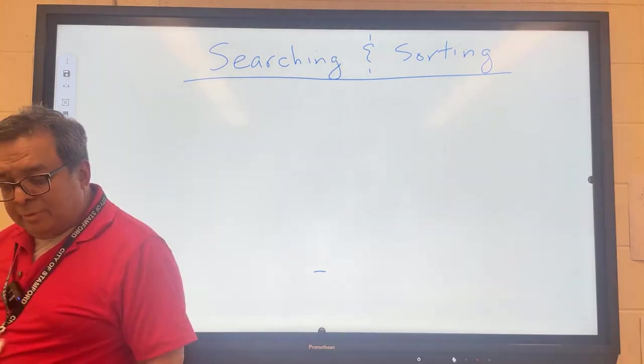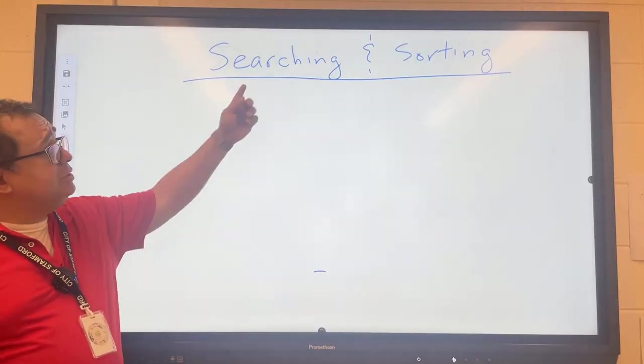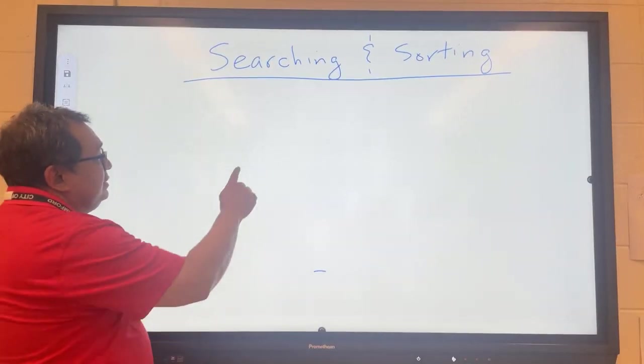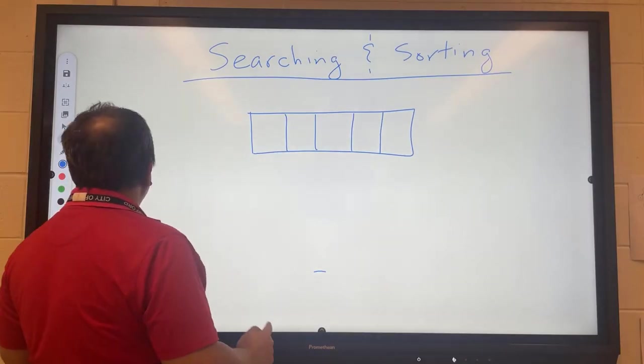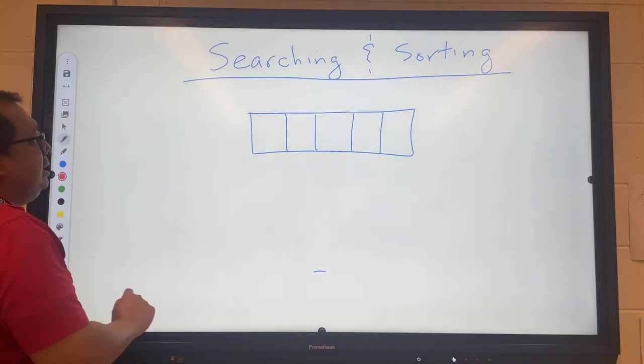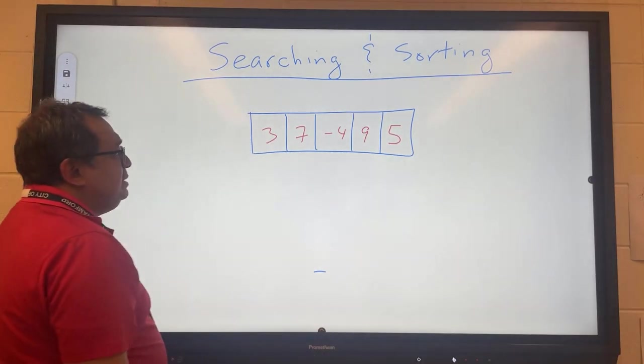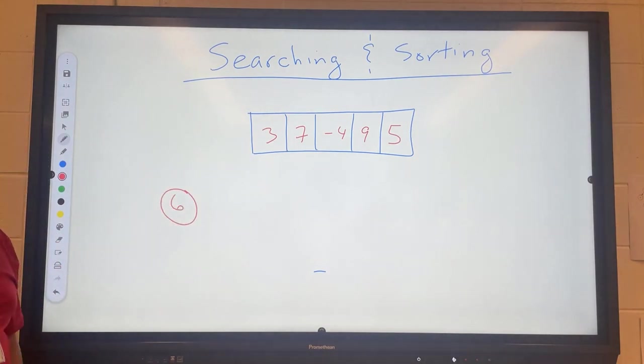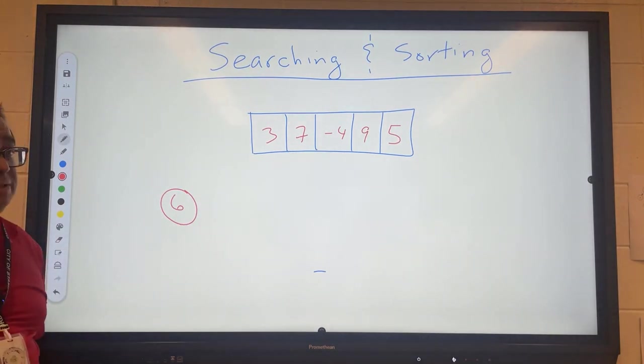We're only going to learn three simple sorts. We want to talk a little bit about how to search an array to find a number. So let's say I have this array right here with some data in the array and I happen to be looking for the number six. Six is not in the array but I don't know that yet. Is the array sorted?